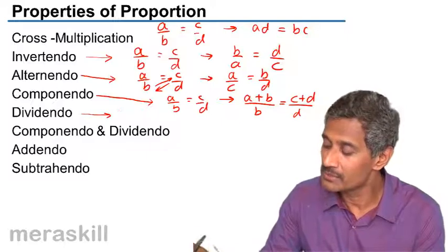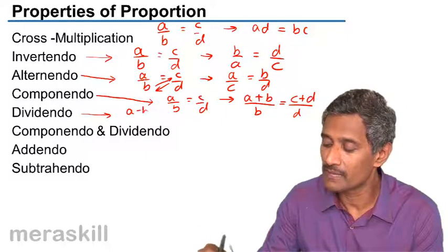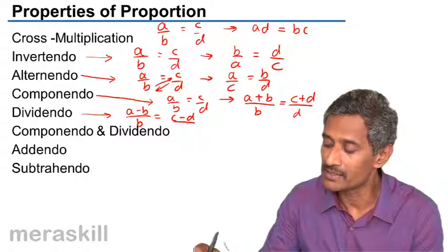Dividendo is just similar to this but it is concerned with minus. That is, A minus B by B is also equal to C minus D by D.